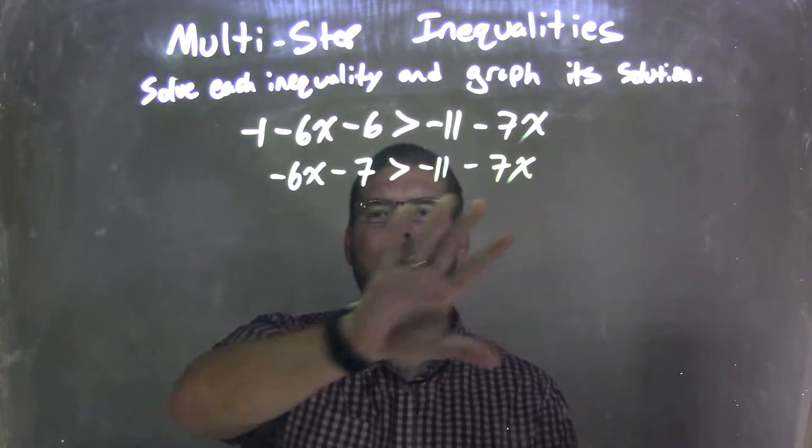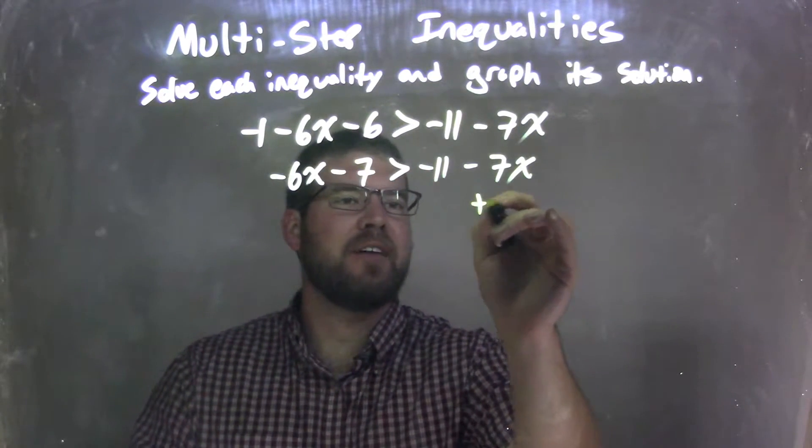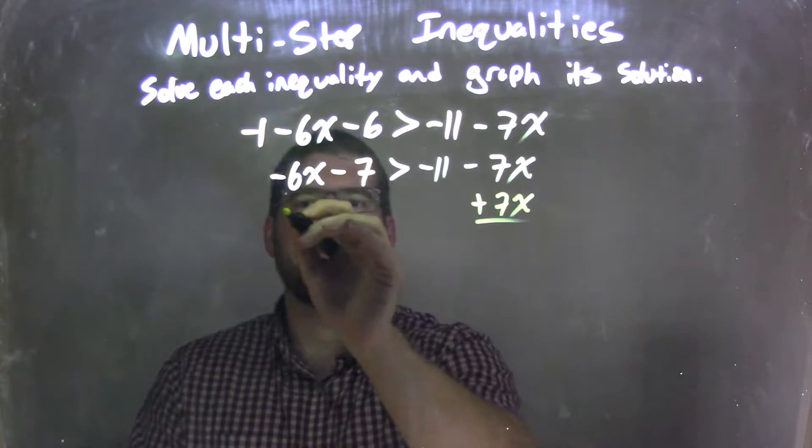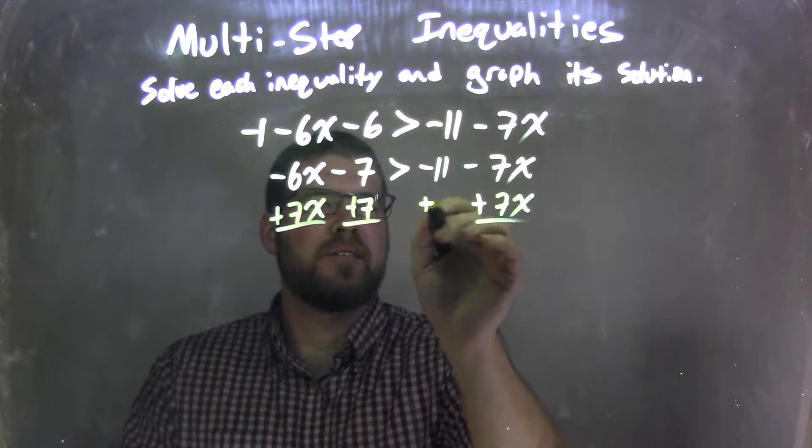So now I'm going to bring my x's over to the left and my numbers to the right. So I'm going to add a 7x to both sides, and I'm going to do this all in one step. I'm going to add a 7 to both sides as well.